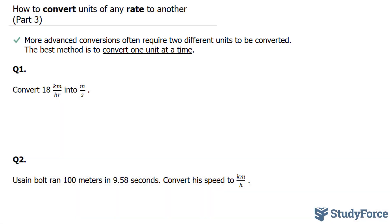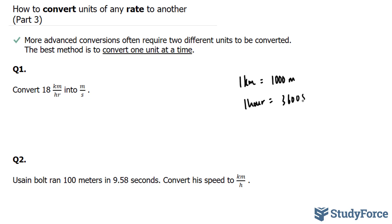In question number one, they ask us to convert 18 kilometers per hour into meters per second. It helps to know that one kilometer is equal to 1,000 meters, and that one hour is equal to 3,600 seconds.